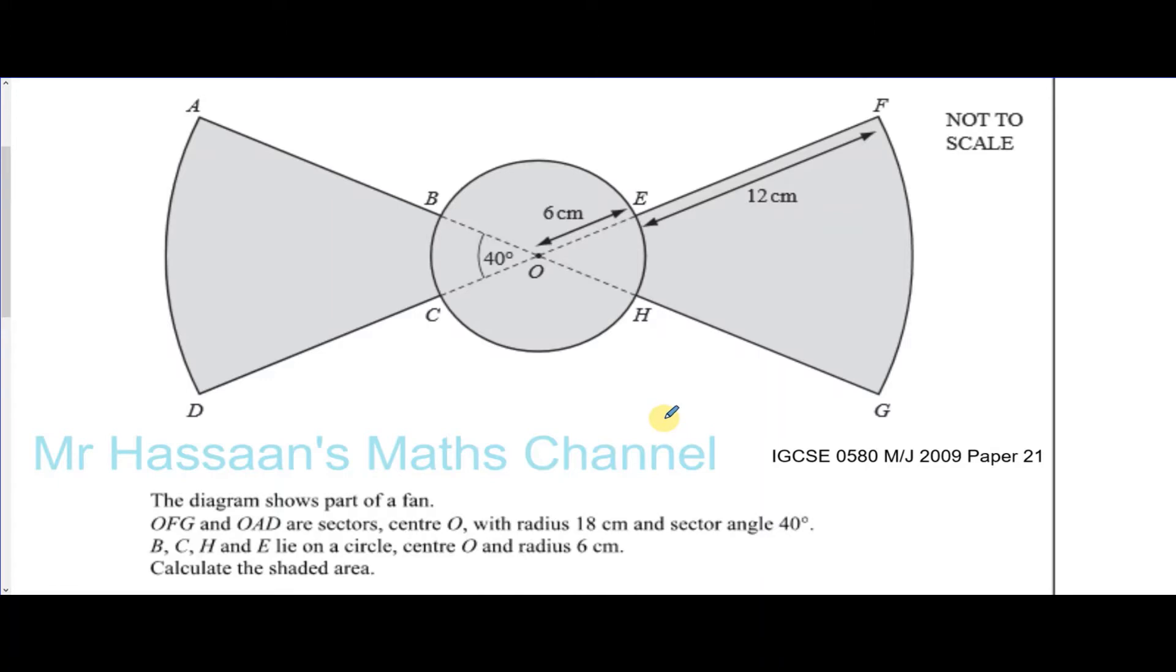There are plenty of ways we could work out the shaded area. However, I think the quickest way would be to work out the area of these two sectors separately, sector BOE and COH, and add them together.